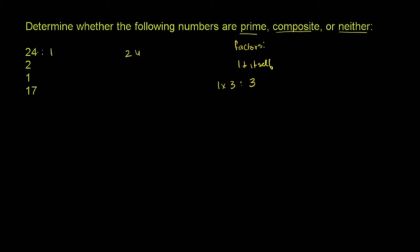In fact, 1 times 24 equals 24. But it's also divisible by 2. 2 times 12 is 24, so it's also divisible by 12. And it is also divisible by 3. 3 times 8 is also equal to 24.